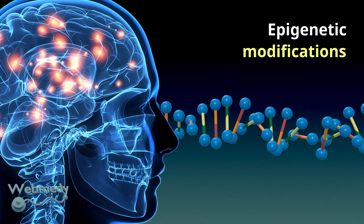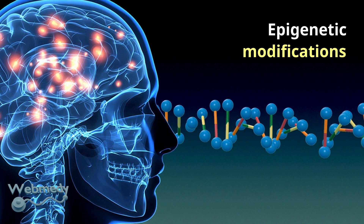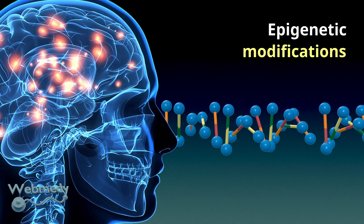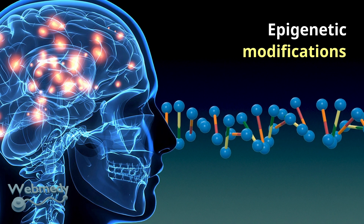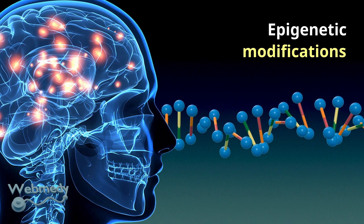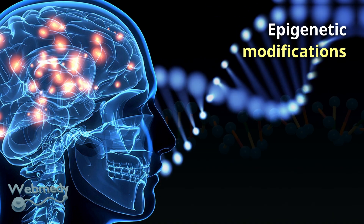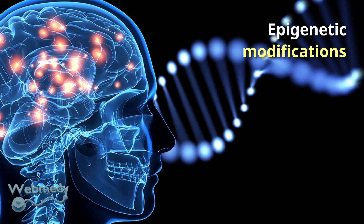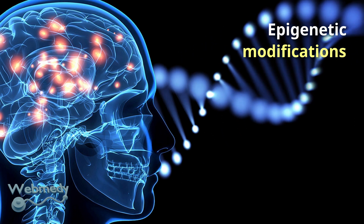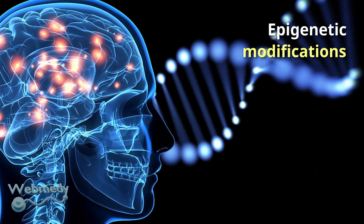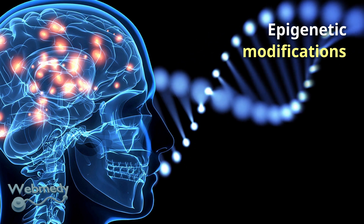Epigenetic changes are changes to DNA molecules that do not change the underlying genetic code, but these changes can affect gene expression. Brain function can be affected by epigenetic changes in a variety of ways, including stress, environmental factors, and experience.